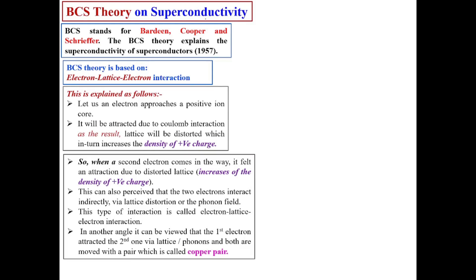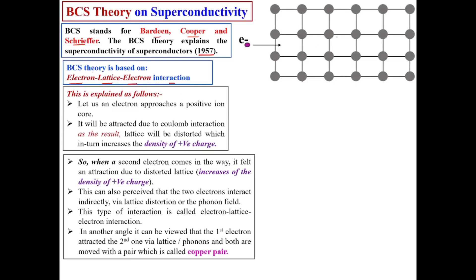BCS stands for Bardeen, Cooper, and Schrieffer — three physicists, and this theory is named after them. BCS theory was given in 1957 and is based on electron-lattice-electron interaction. We are going to discuss this with animation. For that, we consider a homogeneous lattice — a regular arrangement of ions or atoms, these being positive ions.